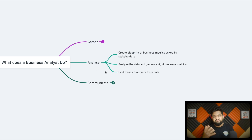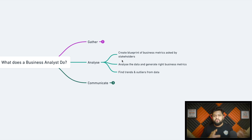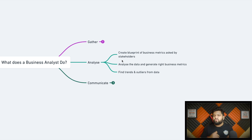Next is the analyze part. After understanding the business process and use cases, you need to create a blueprint of the business metrics asked by the stakeholders. Prepare actual blueprints — mimic the things, create samples, figure out how the data will look, what the edge cases will be, what data-related anomalies exist and how they should be removed — so that once the data is available you can quickly start implementation.